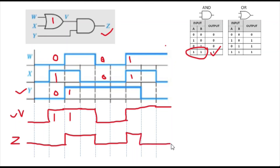This is the way to solve this kind of signal timing diagram. An alternative approach is to pick one input, find where it is 1, then check if the other input is also 1 at those points — if so, output 1, and 0 everywhere else. I hope you liked my explanation — please like and subscribe to my channel.